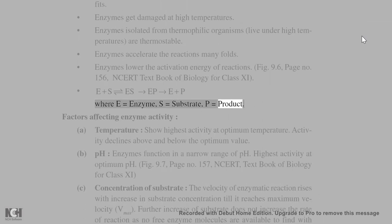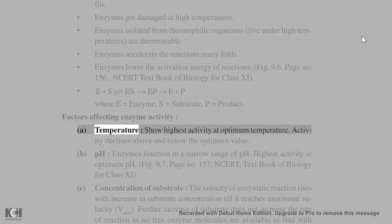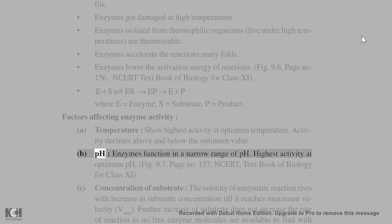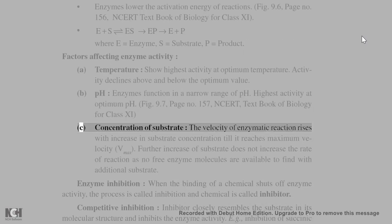Factors affecting enzyme activity: Temperature: show highest activity at optimum temperature, activity declines above and below the optimum value. pH: enzymes function in a narrow range of pH, highest activity at optimum pH. FIG 9.7, page number 157, insert, textbook of biology for class 11.